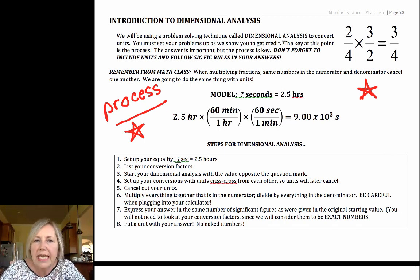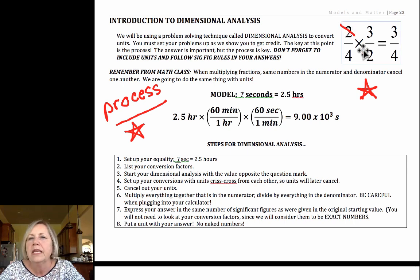Now, dimensional analysis depends upon this mathematical truth. If you took these two fractions, two-fourths, three-halves, and did multiplication, you could simplify that. If you have a number that's in the numerator that is the exact same as a number in the denominator, those cancel. So those twos cancel, we end up much simplified three-fourths. Most of you are familiar with that numerically.